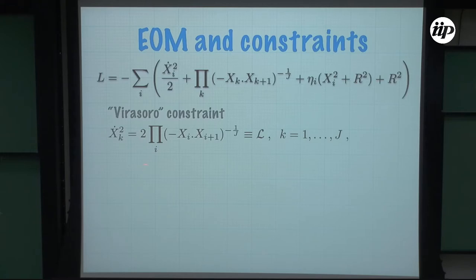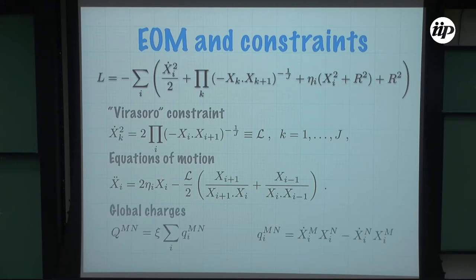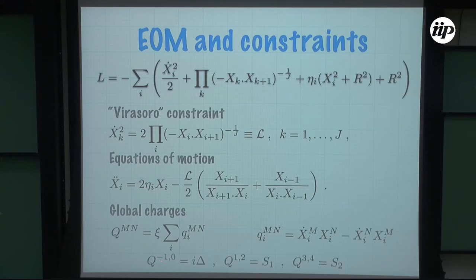Let me write all equations of motion. There is an analog of the Virasoro constraint which comes from gauge fixing the αs to one — which you can, in the limit where j goes to infinity, think of as the continuous Virasoro condition. The equations of motion are quite non-linear. The charges are just rotation charges, since the kinetic term is totally standard. The charge density and the expression for charges is standard — δ, s, and the other spin labels correspond to rotations, and you have the standard relations.